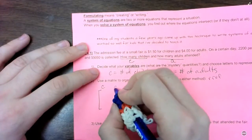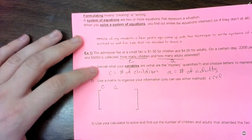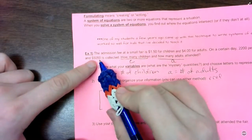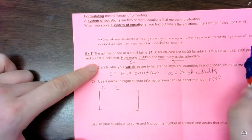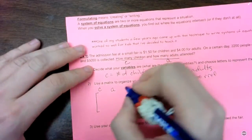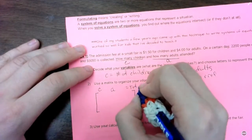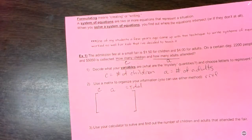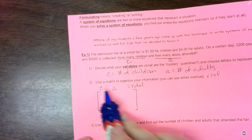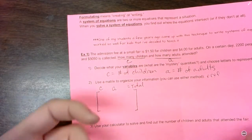I'm going to put adults in the second column. And the other thing we know is the total amount collected and the total number of people that came to the fair. So I'm just going to put equals the total for my third column. So basically, children plus adults equals my total, which makes sense.